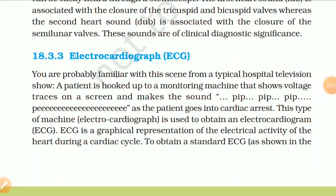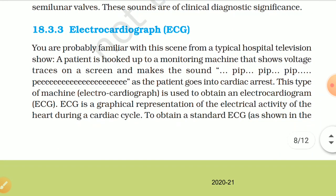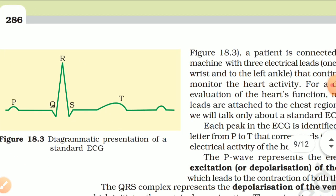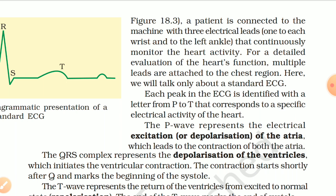18.3.3 Electrocardiograph (ECG). An electrocardiograph is used to obtain an electrocardiogram (ECG), which is a graphical representation of the electrical activity of the heart during a cardiac cycle. To obtain a standard ECG, a patient is connected to a machine with three electrical leads — one to each wrist and one to the left ankle — that continuously monitor the heart activity. For a detailed evaluation, multiple leads are attached to the chest region.